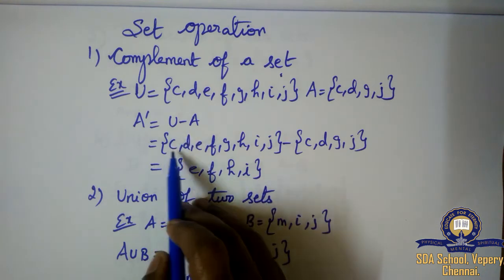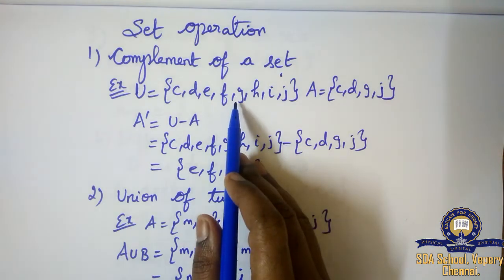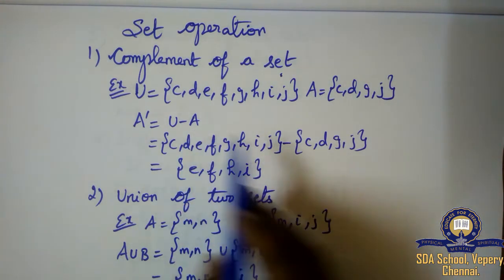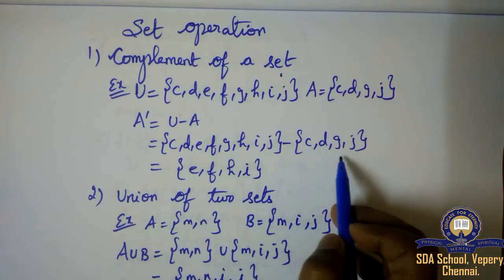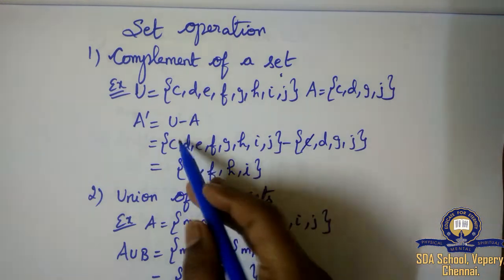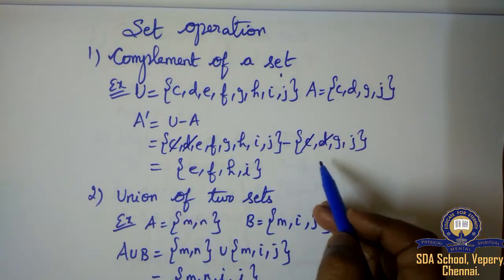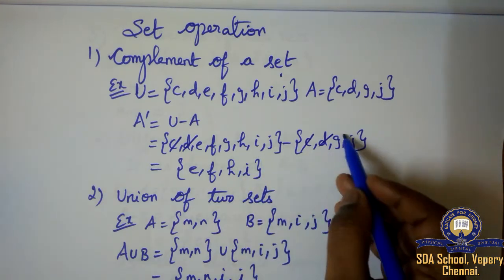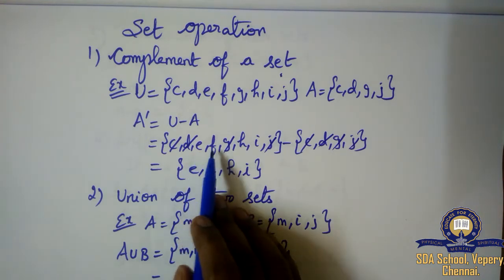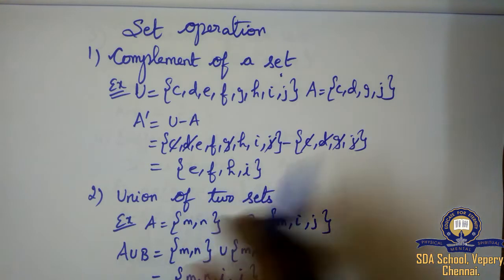I have written the U values here: C, D, E, F, G, H, I, J as given in the example, minus the A value: C, D, G, J. Minus means we need to cancel. We compare both sets and cancel the common values G and J. So the pending elements are E, F, H, and I. This is called complement of a set.